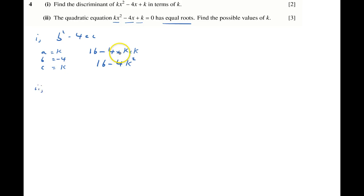Therefore, the discriminant is 0. The discriminant equals 0. And so 16 minus 4k squared equals 0.